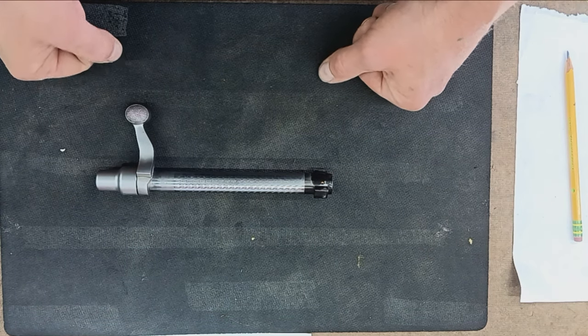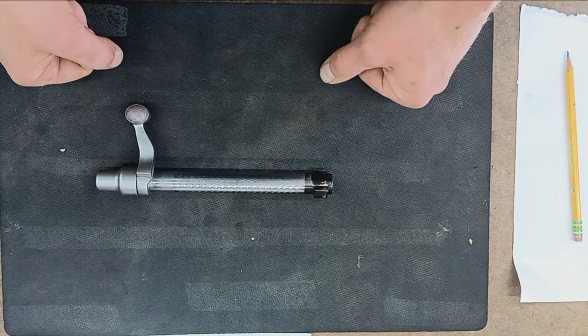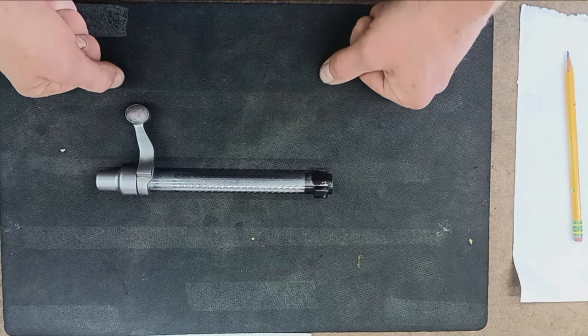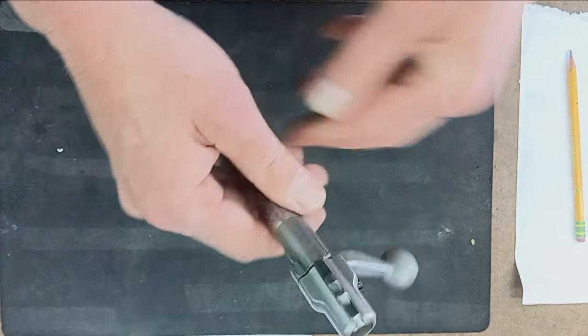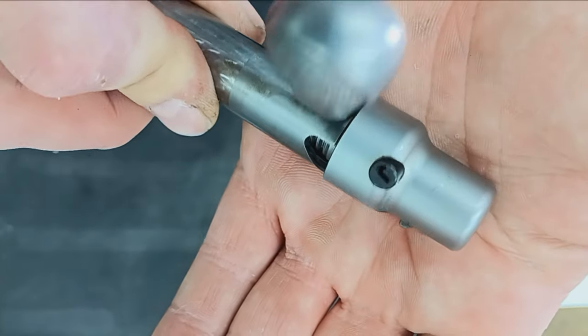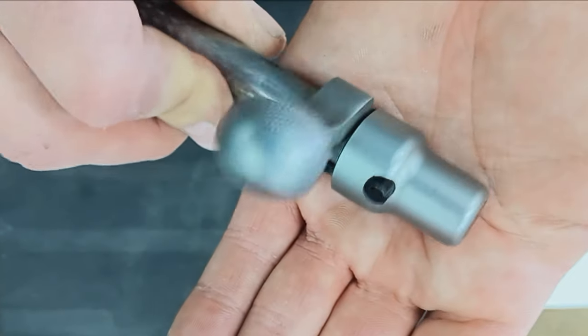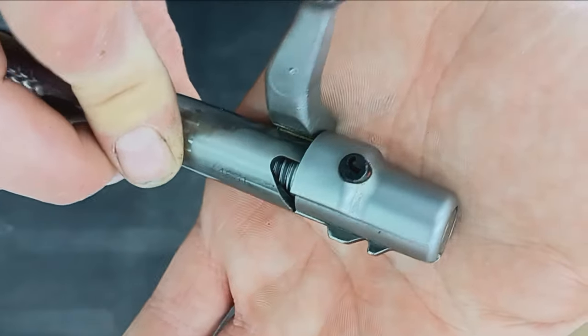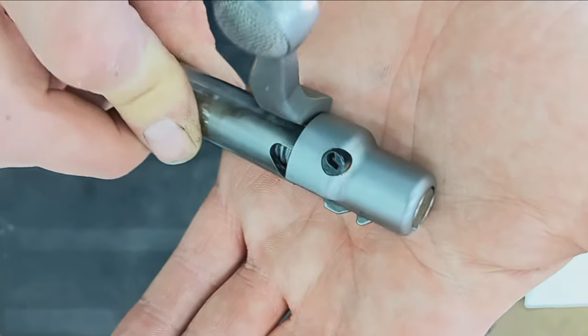For a while there, Remington was making bolts with a lock feature on them. The dreaded, venerable J-lock. Generally, I always tell guys if you see this on a gun that you're looking to buy, run away.